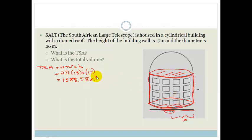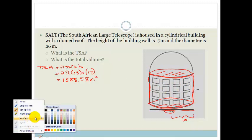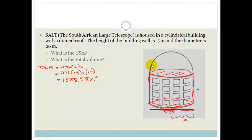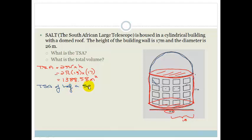Now we need to find the total surface area of the domed roof. This dome is half a sphere — we could carry it on down and it would complete a sphere, but we only want the upper half. So we want the total surface area of half a sphere.